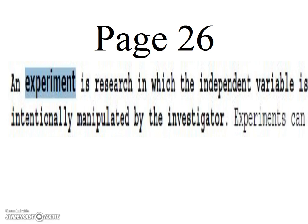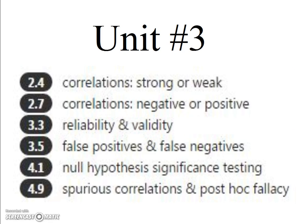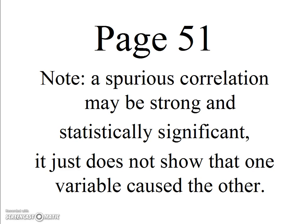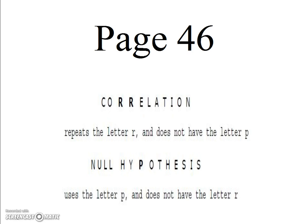It is experiments that are the best technique for inferring a cause and effect relationship. In Unit 3, students want to learn more about spurious correlations and the post-hoc fallacy. A spurious correlation is when we have two collateral effects — neither one caused the other. A spurious correlation can be strong and statistically significant; it just doesn't show that one variable caused the other. What I think students need to know from Unit 3 is that correlations must be tested with the null hypothesis probability. When p is less than 0.05, the null hypothesis may be rejected and the results are significant.